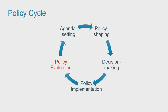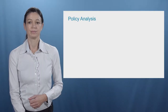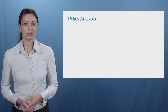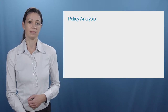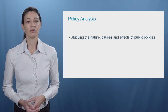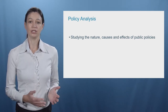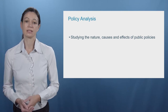In reality, the different steps of the policy cycle are not as clearly delineated as shown graphically. Often, the agenda setting and the policy formulation phase are hard to distinguish, and also decision-making and implementation can sometimes overlap. The academic field of policy analysis covers any of the stages of the policy cycle. It can be described as the analysis of the nature, causes and effects of a policy.